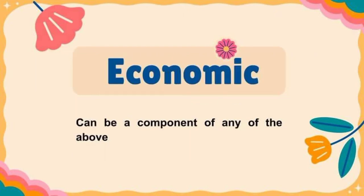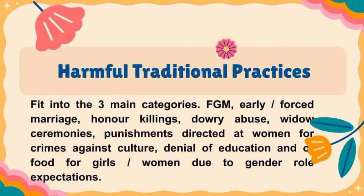Next is the economic type. And then the harmful traditional practices, which fit into three main categories: FGM, early or forced marriage, honor killings, dowry abuse, widow ceremonies, punishments directed at women for crimes against culture, and denial of education or food for girls and women due to gender role expectations. In harmful traditional practices, in some religions, forced marriage is practiced even if a person is not of legal age — if parents want you to be married, you are expected to marry someone you may not know.